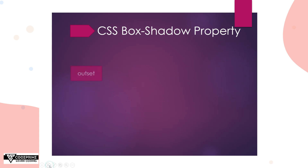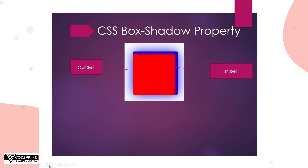First of all, let me show you that CSS box shadow works for both outset and inset. Here you can see an example — there is a red background color box, and you can see a blue color shadow on the outer layer as the outset, and also a blue color shadow on the inside as the inset shadow.